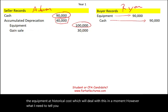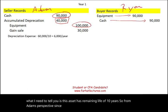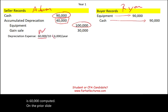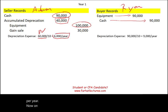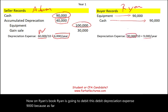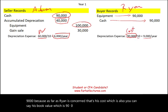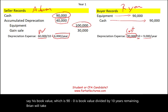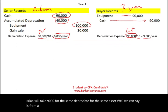From Adam's perspective, with a remaining life of 10 years and a book value of $60,000, Adam takes $6,000 of depreciation per year. On Ryan's books, Ryan debits depreciation expense $9,000 — because his cost is $90,000 divided by 10 years remaining. From a consolidated perspective, we have $3,000 more in depreciation that we'll need to deal with.